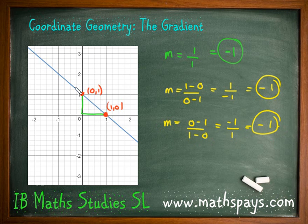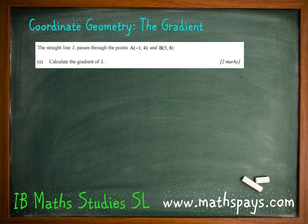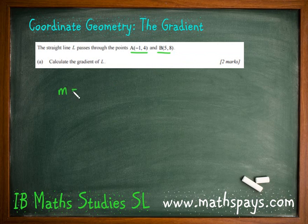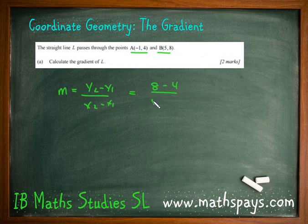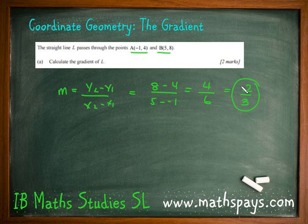The most common question you'll see is being given two coordinates. We're given coordinates A and B and need to use the formula: m equals y2 minus y1 over x2 minus x1. So it's 8 minus 4 over 5 minus negative 1, which is 4 over 6, simplified to 2 thirds. We have a positive gradient of 2 thirds. They may also ask you to find the midpoint or distance, but today we're just focusing on the gradient.